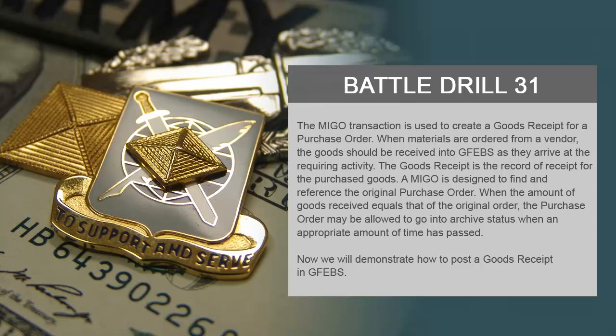The MIGO transaction is used to create a goods receipt for a purchase order. When materials are ordered from a vendor, the goods should be received into GFibs as they arrive at the requiring activity. The goods receipt is the record of receipt for the purchased goods.